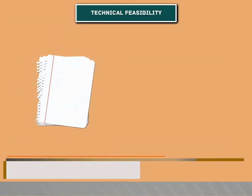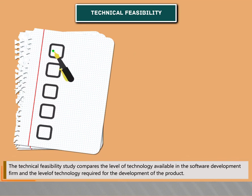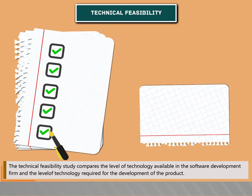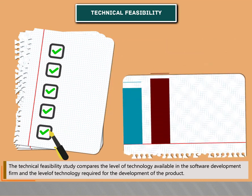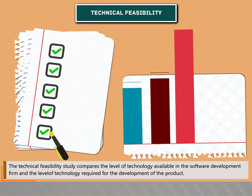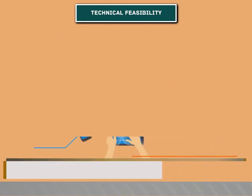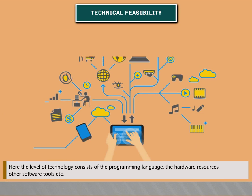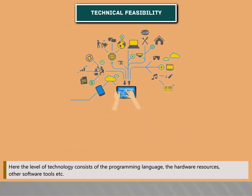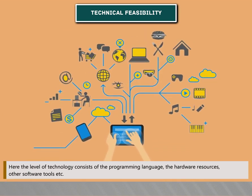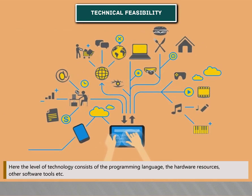Technical feasibility study compares the level of technology available in the software development firm and the level of technology required for the development of the product. The level of technology consists of the programming language, hardware resources, other software tools, and so on.